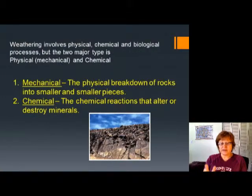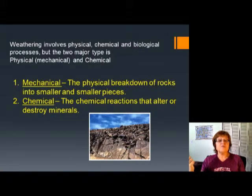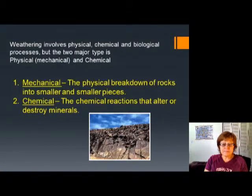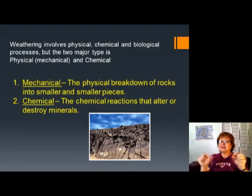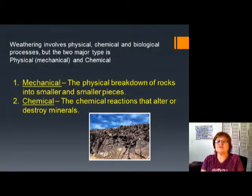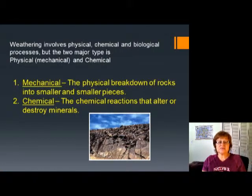We have two kinds of weathering, and we already learned some of that in the sedimentary rock chapter, so it's kind of a refresher. The two major types are physical or mechanical and chemical weathering. With physical or mechanical weathering, the original rock is physically breaking down into smaller particles, but the original parent rock composition is still recognizable — the most important thing about physical weathering is that at the end you can still tell what the original rock composition was. With chemical weathering, it completely destroys the original minerals, so you will not be able to tell what kind it used to be.